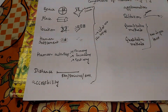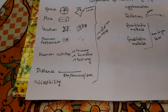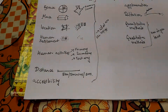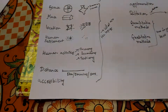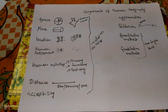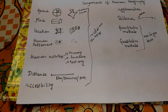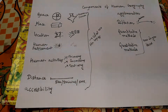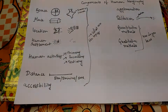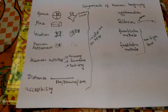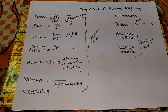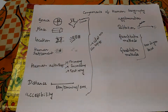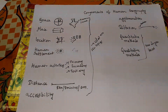Human settlement can be of different types — clustered, uniform, or dispersed — and human geography tries to understand why these patterns occur. Human activity can be primary, secondary, tertiary, or quaternary. Distance is also an important component, understood in different contexts: conventional distance in kilometers, time-based distance, and economic or monetary value of distance. Accessibility is also crucial — it tells us whether a particular location is favorable for people to access their basic needs.